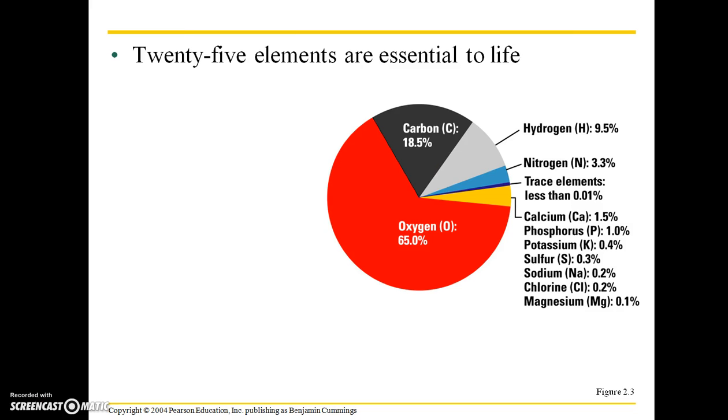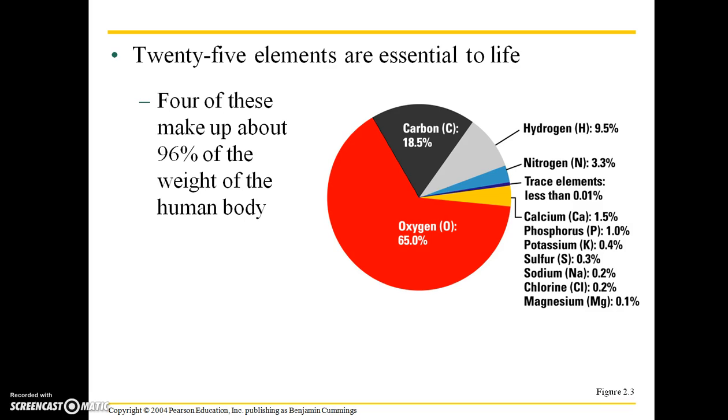There are 25 elements that are essential to life. Four of these make up about 96% of the weight of the human body. So oxygen, carbon, hydrogen, and nitrogen, as well as calcium, make up a large portion of our body weight. Trace elements occur in smaller amounts, and many of these we have to consume from food.